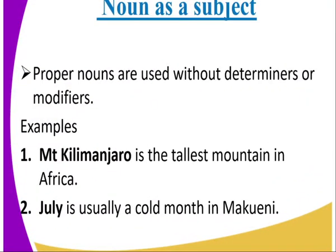Proper nouns are used without determiners or modifiers. Remember, proper nouns are those nouns that name specific things, people, or places. Example: Mount Kilimanjaro is the tallest mountain in Africa. July is usually a cold month in Makwene.